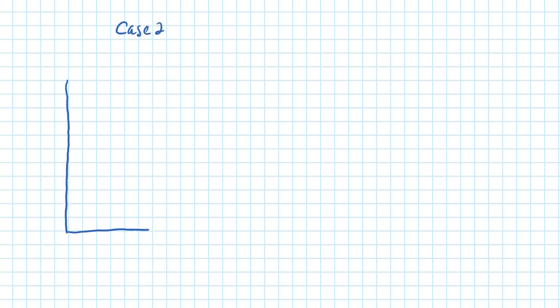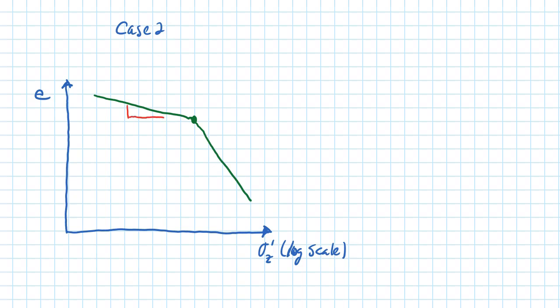For Case 2, we again plot the bilinear void ratio versus effective stress curve on a log scale, with slope C sub R for the first section and C sub C for the second. In this case, when we add delta-sigma, the initial vertical effective stress plus delta-sigma is greater than the pre-consolidation stress sigma-prime-C. So we get compression along both the recompression curve and the virgin compression curve, and we must use both slopes C sub R and C sub C — just as we used both slopes of the bilinear bar stress-strain curve.